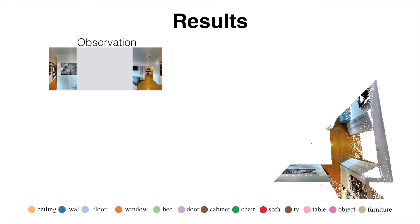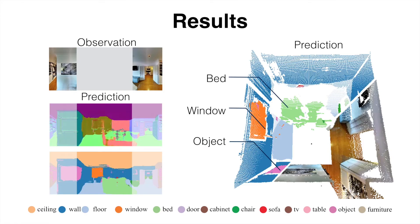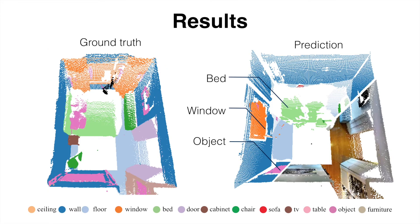Here we show some more results. This is the input observation with its color image and a top-down view of its 3D point cloud. Here is the prediction. The network is able to predict the location of a bed, chair, and this painting on the wall.